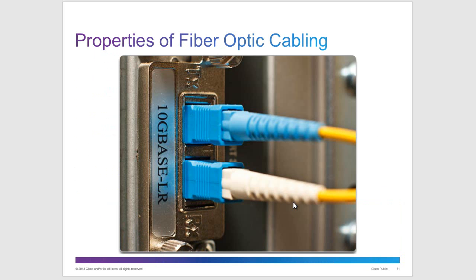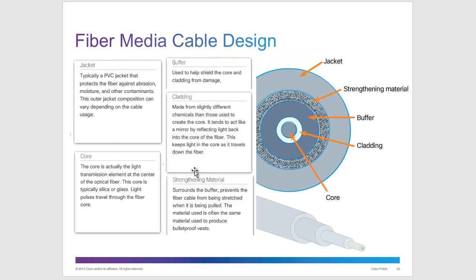Fiber optic cabling — if money is no object, it's the best cabling available. Fiber optic has separate send and receive ends. It's composed of an outer jacket, strengthening material, a buffer, cladding, and the core where light is transmitted. It's a little less flexible than copper cabling, but it's better in virtually every way.